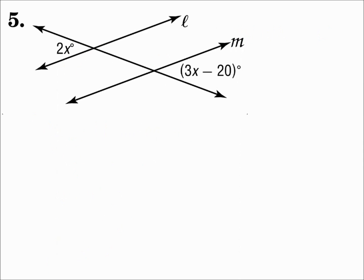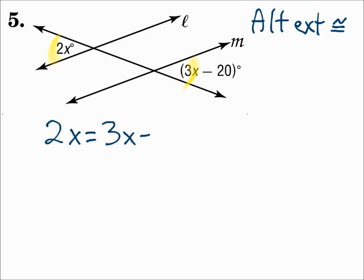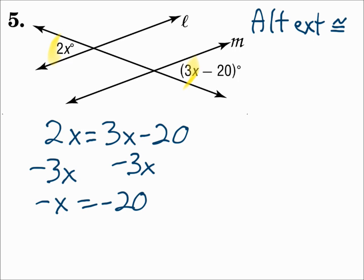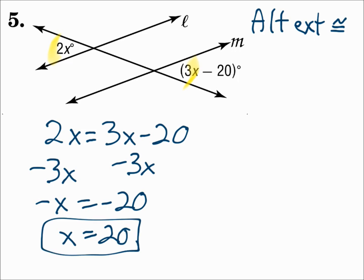Number five. Here we have alternate exterior angles — they're outside the two lines on opposite corners. And when alternate exterior angles are congruent, then the lines are parallel. So let's make these equal to each other: 2X equals 3X minus 20. Solve for X — get the X's on one side by subtracting 3X from each side. Negative X equals negative 20, so X equals 20. That works because we have alternate exterior angles, and when alternate exterior angles are congruent, the lines are parallel.